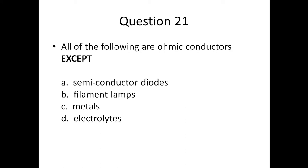Question twenty-one: all of the following are ohmic conductors except — A) semiconductor diodes, B) filament lamps, C) metals, or D) electrolytes.